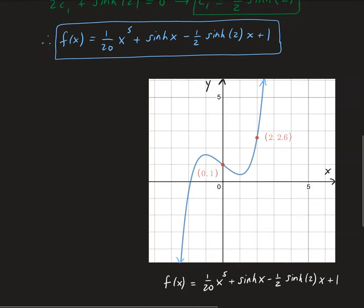Down here is the graph of that function. You can see that it's going through the two initial values — the initial value of (0, 1) and the initial value of (2, 2.6).